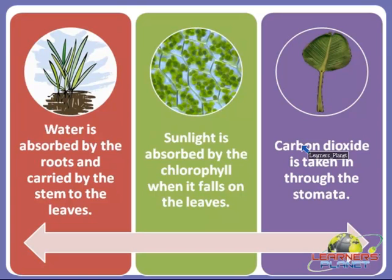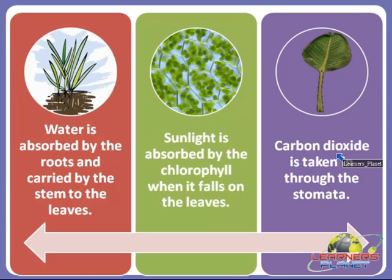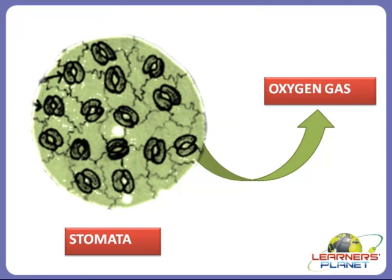These three — water, sunlight, and carbon dioxide — along with chlorophyll play a very important role in helping the plant prepare its food. After the food is prepared, the oxygen gas is given out through the tiny holes known as stomata.